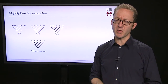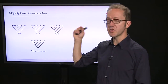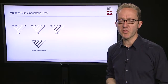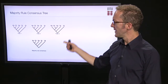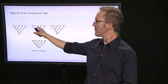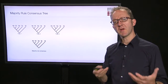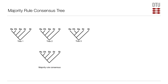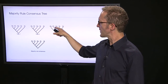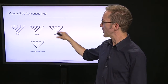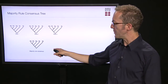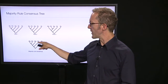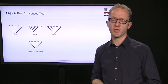This information can be used in another form called the majority rule consensus tree. The idea is simply that the most frequently occurring groupings are the ones we represent in the consensus tree. In this case, the first two trees agree that human and chimp are closely related, and only the third tree disagrees. The majority rule consensus tree would therefore be identical to the first two input trees.